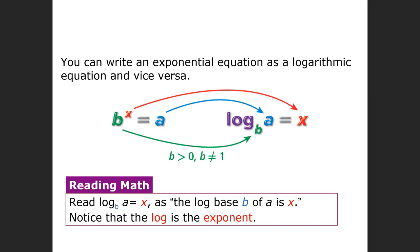So let's take a look. If I gave you something like the log base 3 of 9 is equal to 2, and I asked you to rewrite this as an exponent — well, you can rewrite any log as an exponent. The base is going to be the base of the exponent. So this would be 3, and then 3 to the second power is equal to 9.